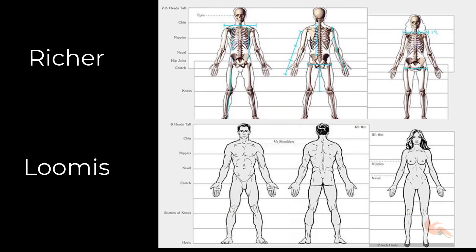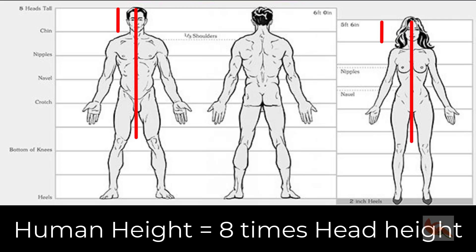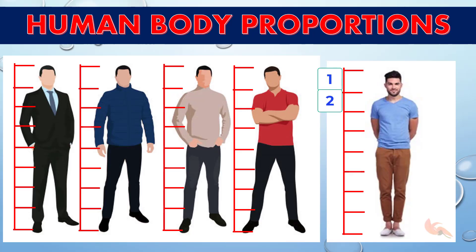There are many theories but Paul Risher and Loomis methods are quite popular. Both propagate a theory of an average human body's height as 8 times the height of its head. In this, the height of the head is taken as 1 unit and an average body is 8 units tall.